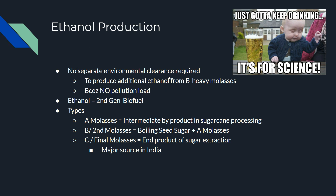This is because it creates no pollution. Ethanol is a second-generation biofuel made from food stock. There are three types of molasses: A molasses is an intermediate by-product in sugar processing. B or second molasses is prepared by boiling C sugar plus A molasses. C or final molasses is the end-product of sugar extraction, and it is the major source of ethanol in India.